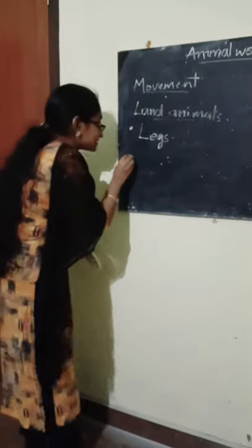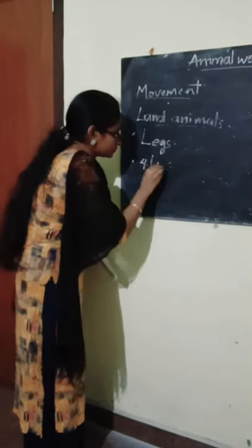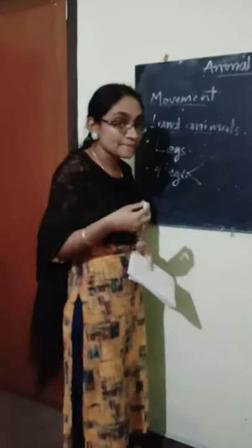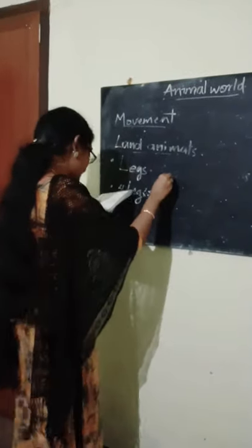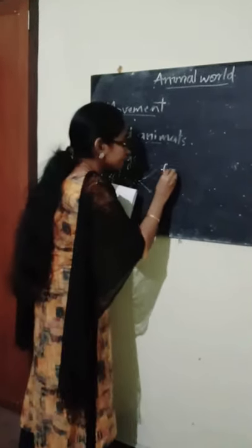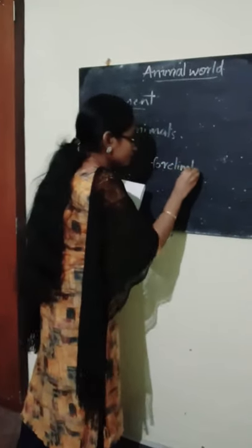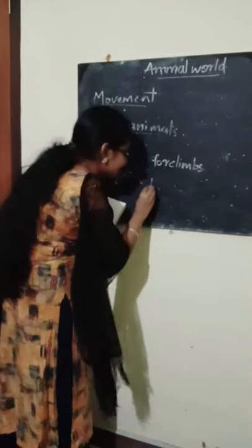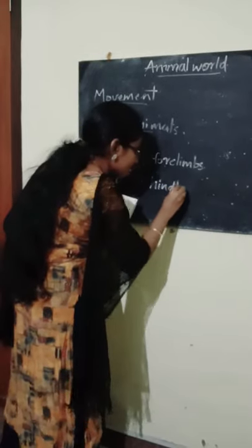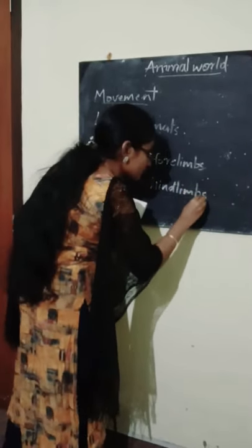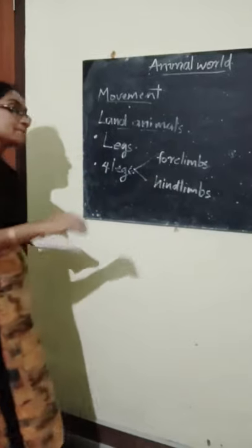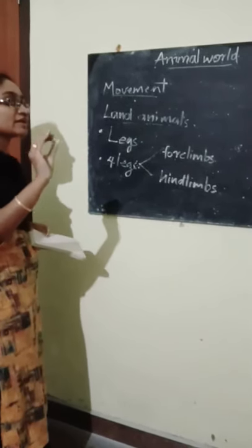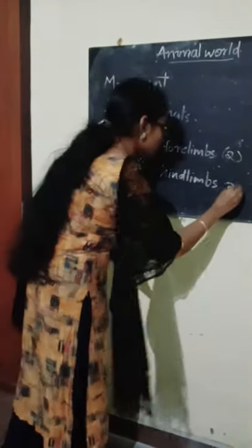Some animals have four legs — two at the front and two at the back. The legs at the front side are called forelimbs, and the legs at the back side are called hind limbs. For example, a cat has two forelimbs and two hind limbs.